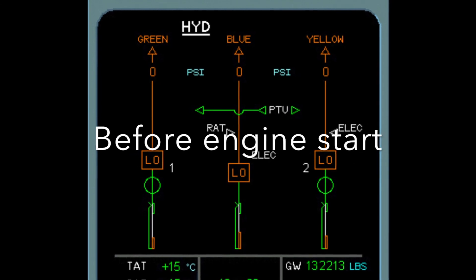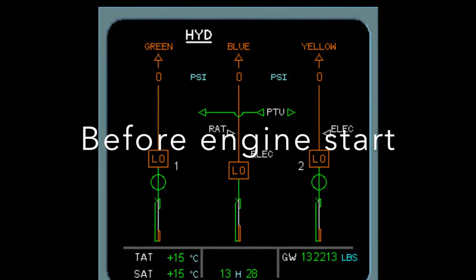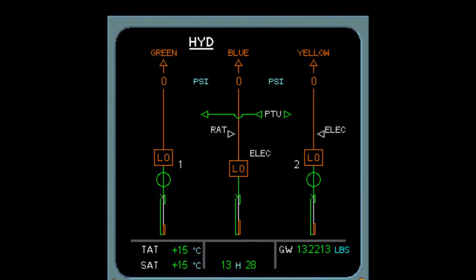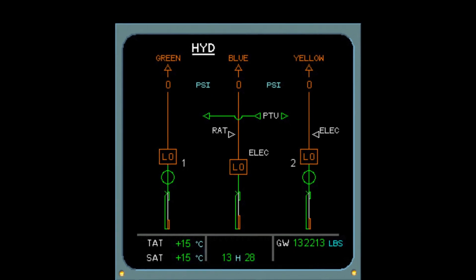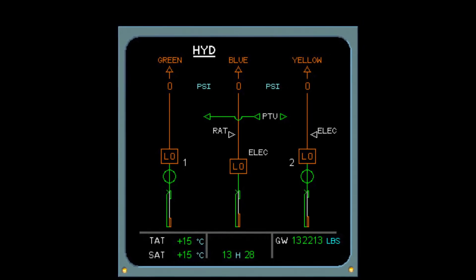Now, let us have a look at the E-CAM display of the hydraulic page. Before the engine starts, this is how the page looks like. You can clearly see the three different hydraulic lines. The arrow marking here represents the hydraulic level filled in each reservoir. Since the arrow is inside the green box, it shows that the hydraulic level is in normal range.